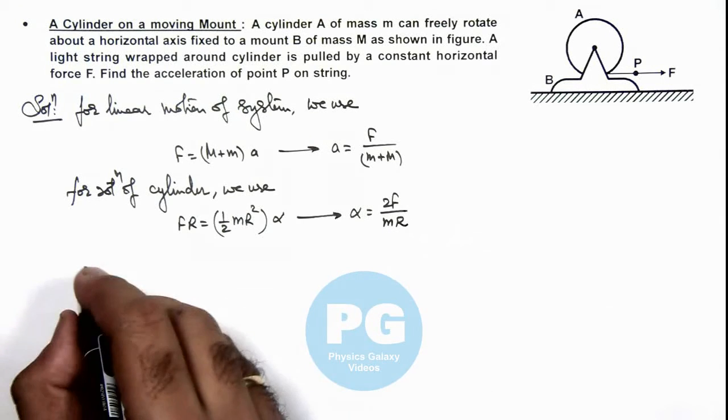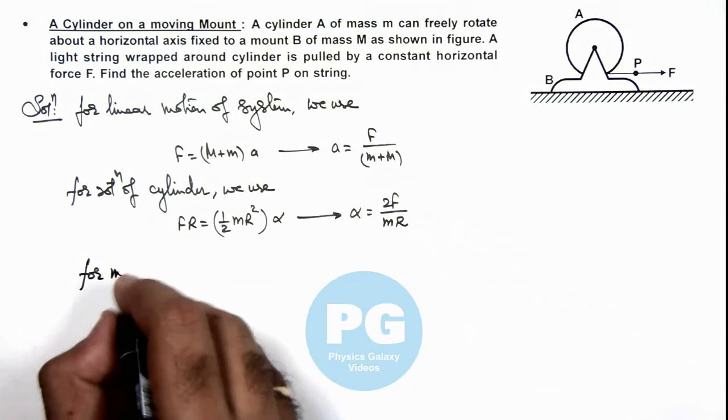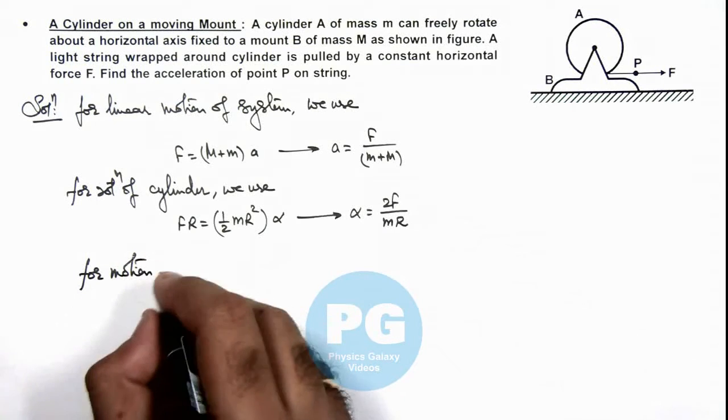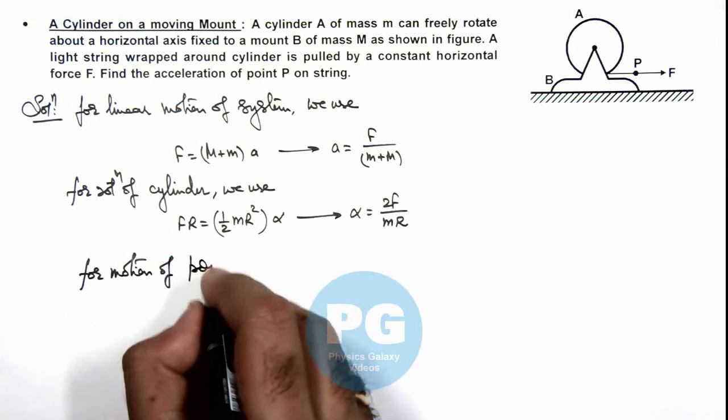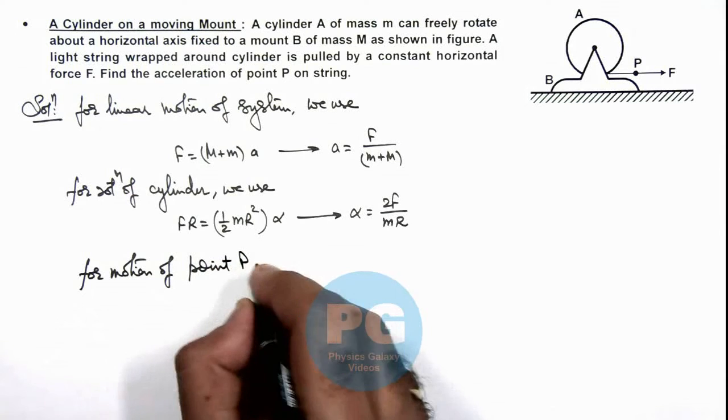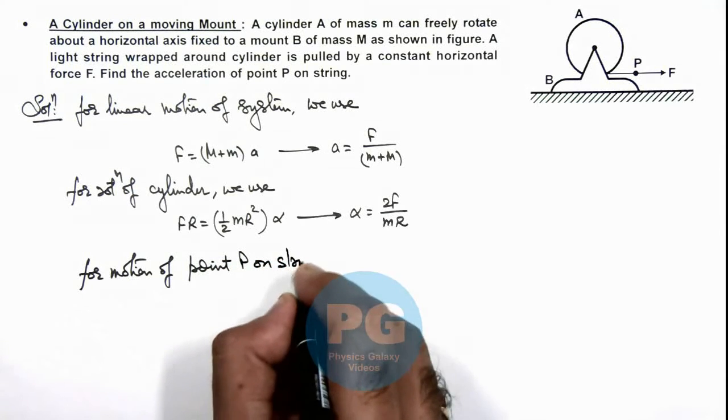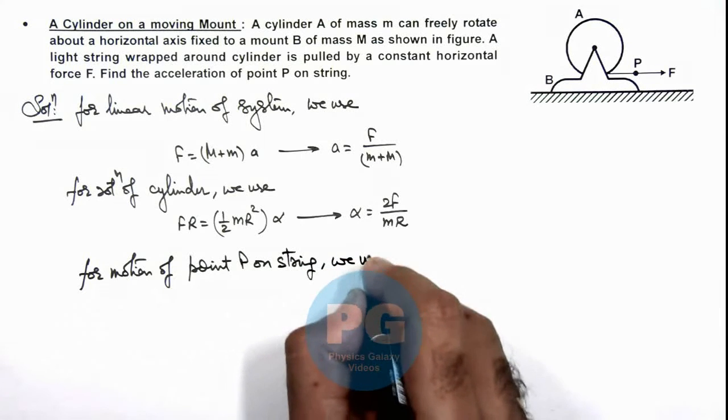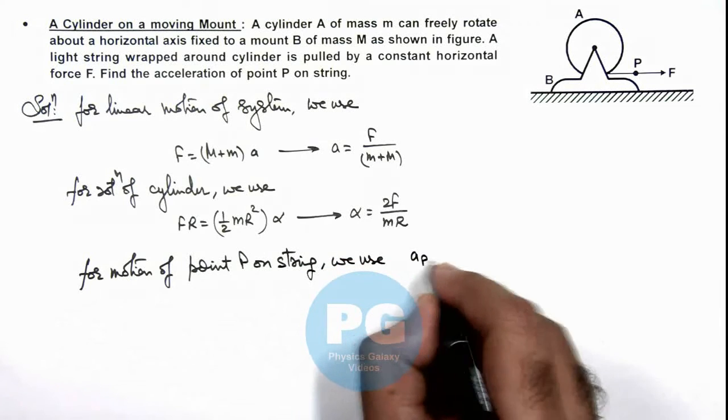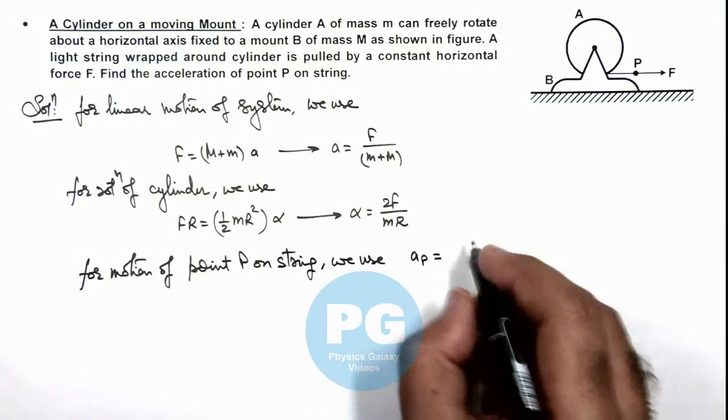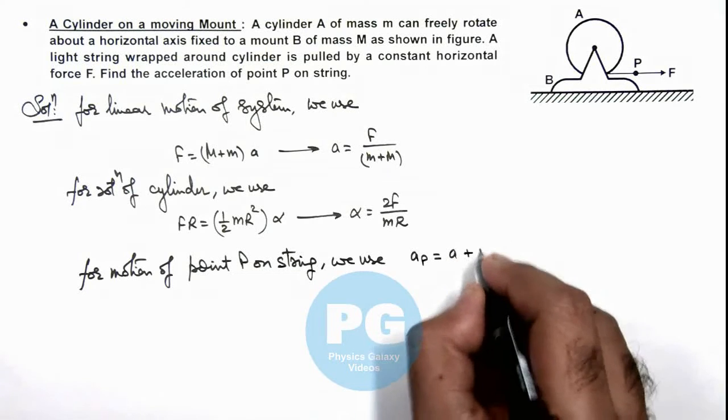Now, for motion of point P on string, here we use: acceleration of point P equals a + Rα.